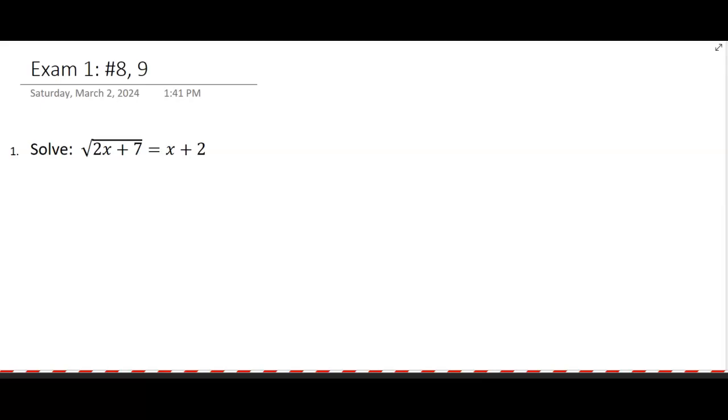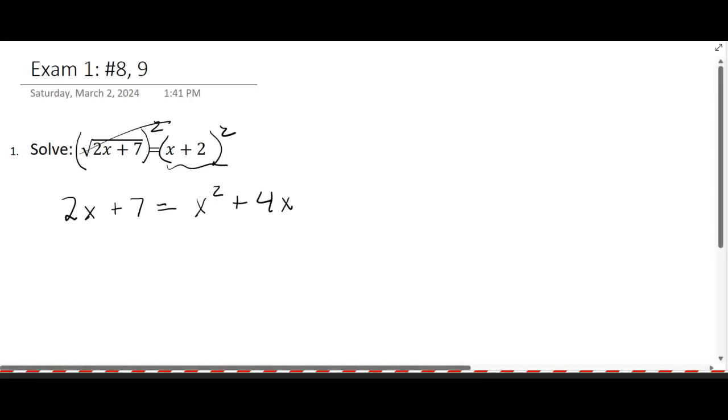Page four I think. So we have this equation, it has a square root in it, that means we need to square both sides. Again this is back to that idea of inverses. On the left hand side then the square root and the square undo each other and you have 2x plus 7. But on the right hand side you're going to have to square out that binomial.